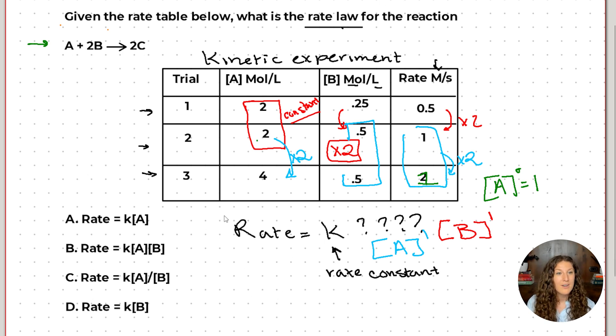So now let's put it together for our question. We know that the rate equals K, A to the 1, B to the 1. So just A times B. So that's going to give us our answer here, B.